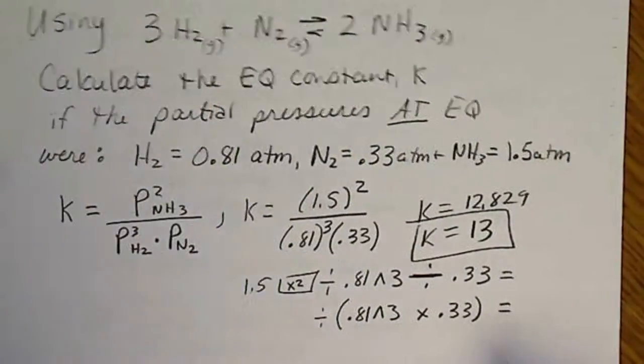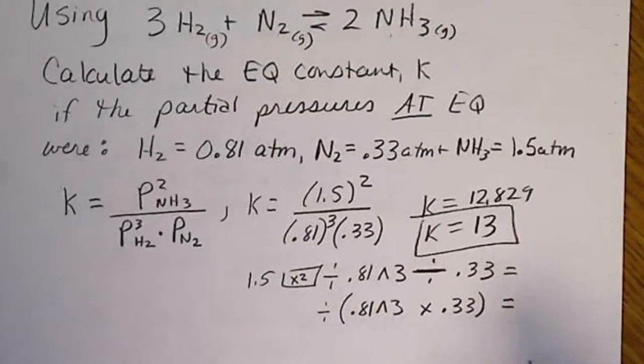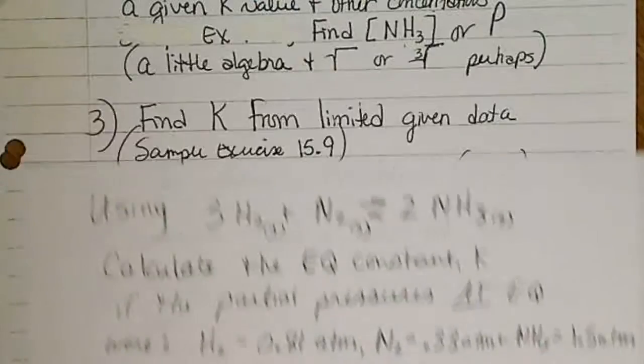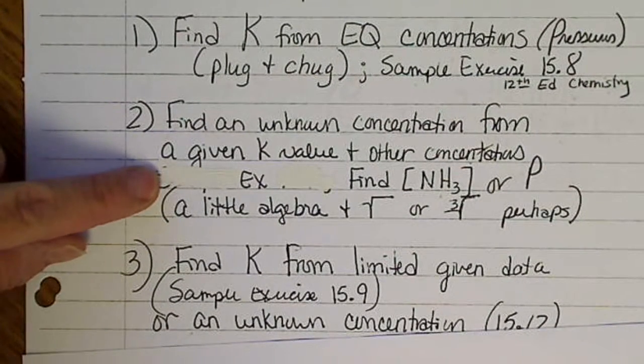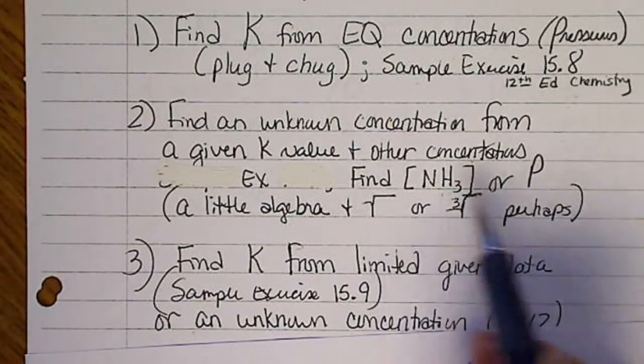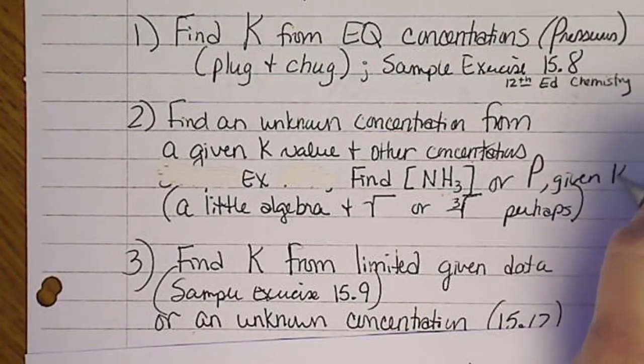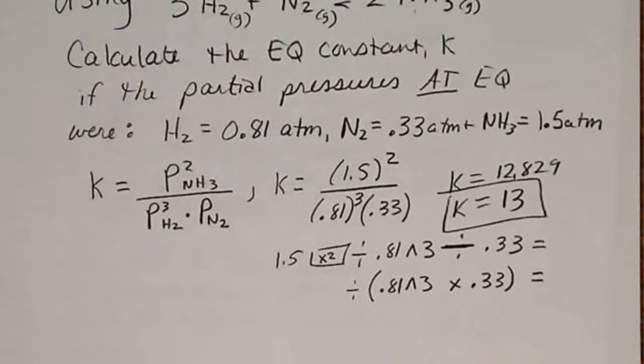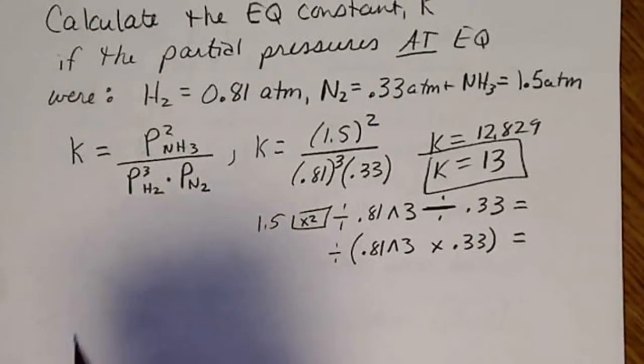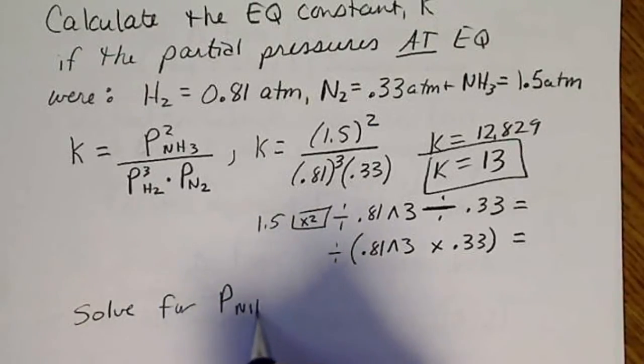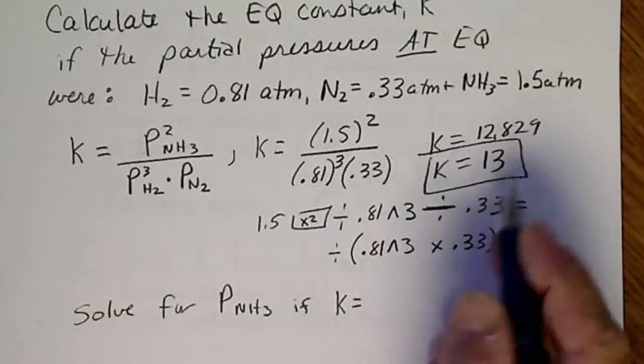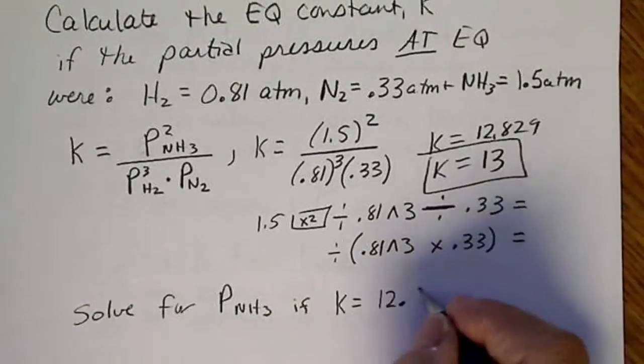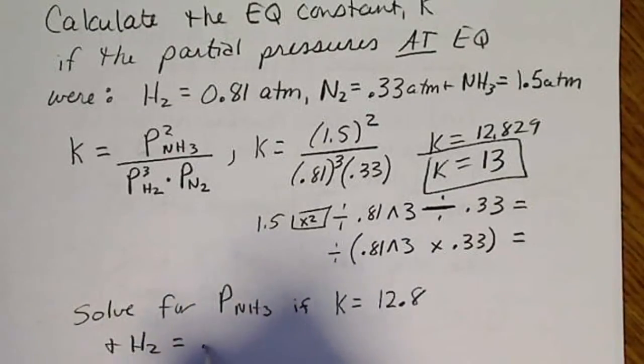So what we can do now that we know that K is 13, we can rearrange the equation and solve for an unknown pressure or concentration. So that just takes a little bit of algebra. If we're going to solve for NH3, that means that we're given the K value and the other pressures. I'm going to just use this problem and solve for the pressure of NH3. If K equals 12.8, so that we don't have a rounding error, and we'll say that hydrogen is still 0.81 atm.